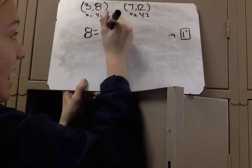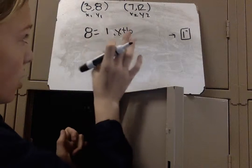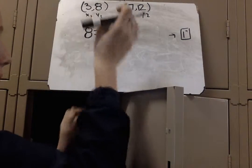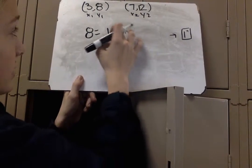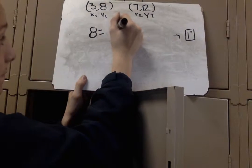8 equals 1, and then x, we're going to pick one of the x's as well, but I'm going to pick 3 since it's in the same plot. So, it's going to be 1 times 3, which is 3.